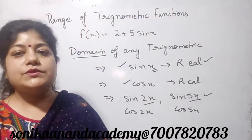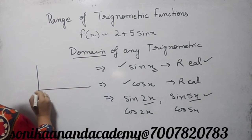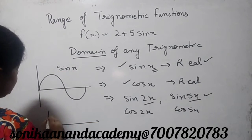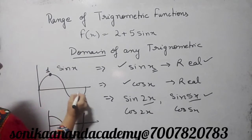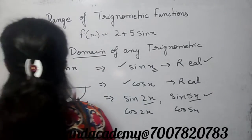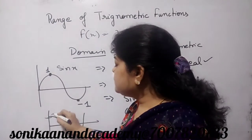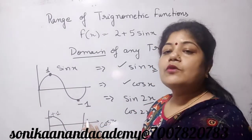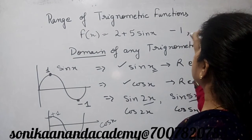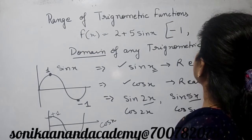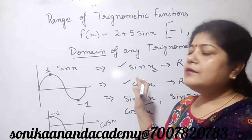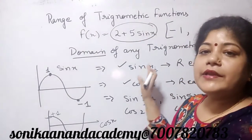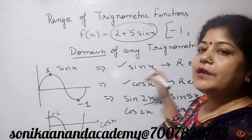Now, what is the range of these values? Whenever we plot the graph, the graph of sin x has a maximum value of plus 1 and a minimum value of minus 1. Similarly, the maximum value is plus 1 and minimum value is minus 1 for cos x. So the range of sin x and cos x always lies between minus 1 and 1. We apply this concept to find the range of these types of questions.